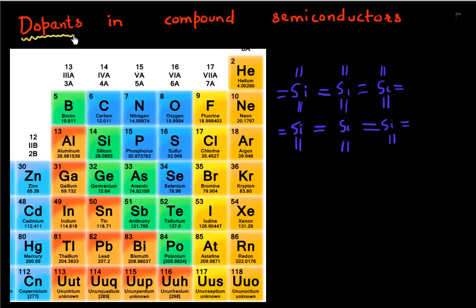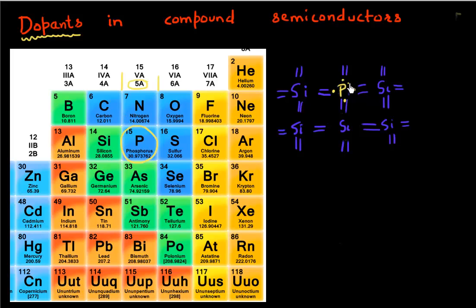In the last video, we were talking about doping and dopants in semiconductors. We saw that if you have a silicon lattice and if you replace one of these silicon atoms with a group five element like phosphorus, you have five electrons in the valence shell of your phosphorus. It acts as a donor where the phosphorus atom has a positive charge and gives away this extra electron to the lattice.